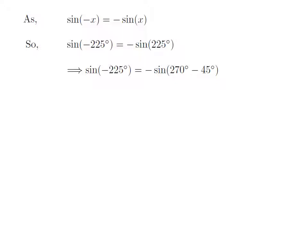As 225 degrees is equal to 270 degrees minus 45 degrees, sine of minus 225 degrees is equal to minus sine of 270 degrees minus 45 degrees.